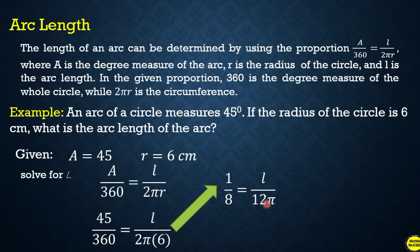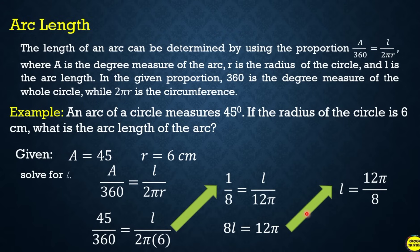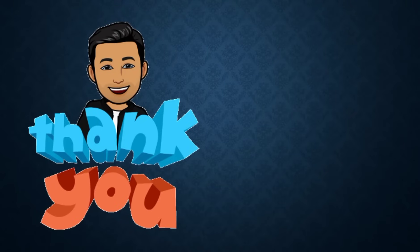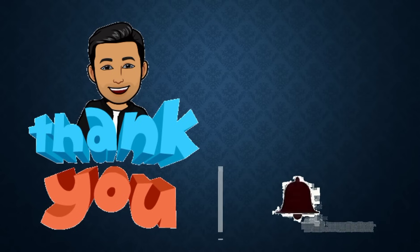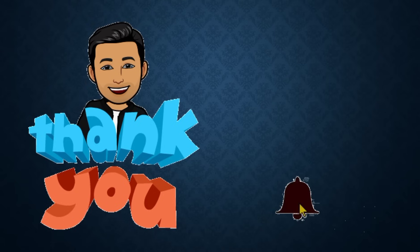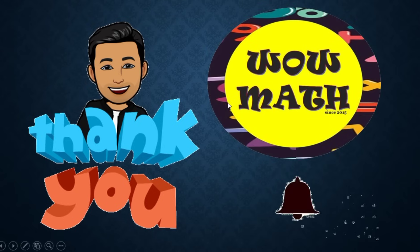From 1/8 = l/(12π), cross multiply: 8l = 12π, then divide both sides by 8, giving l = 12π/8, which equals approximately 4.71 cm.